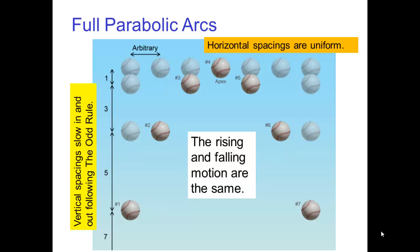We now know how to do the timing and spacing for motion on a parabolic arc. First, for a ball flying through the air, the rising and falling motion are the same. The horizontal spacings are uniform. Those spacings are large if the ball is going fast and short if it's going slow. The vertical spacings slow into the apex and then slow out of the apex according to the odd rule.